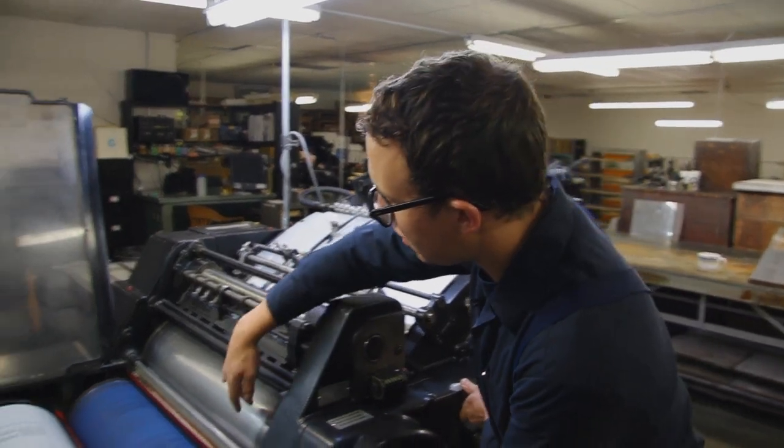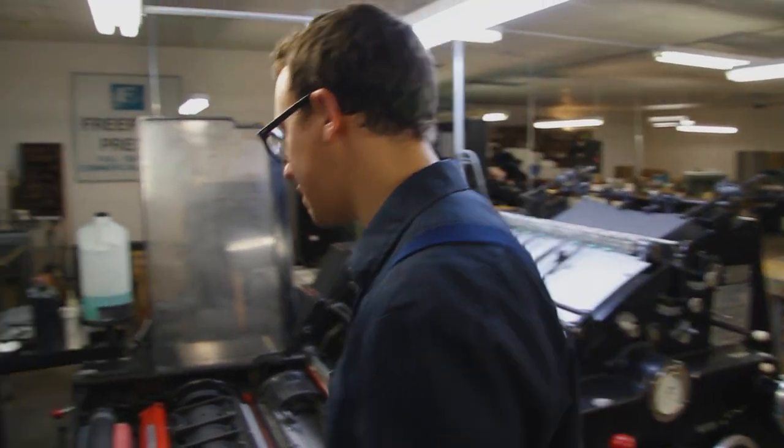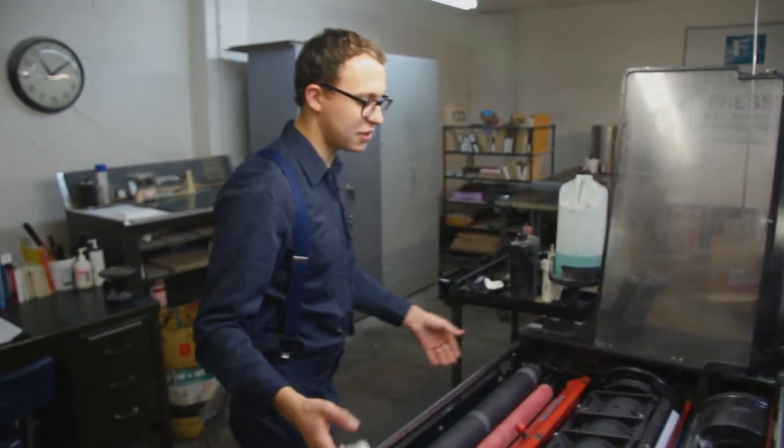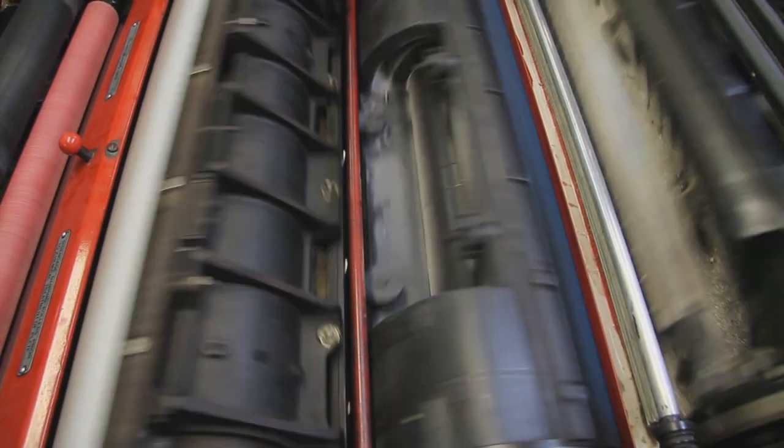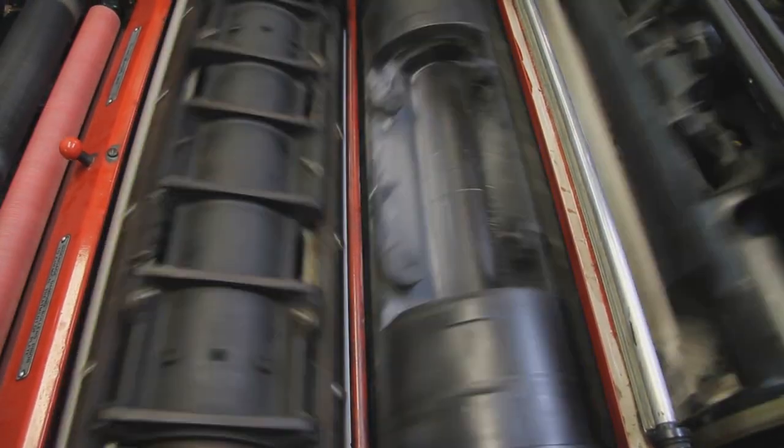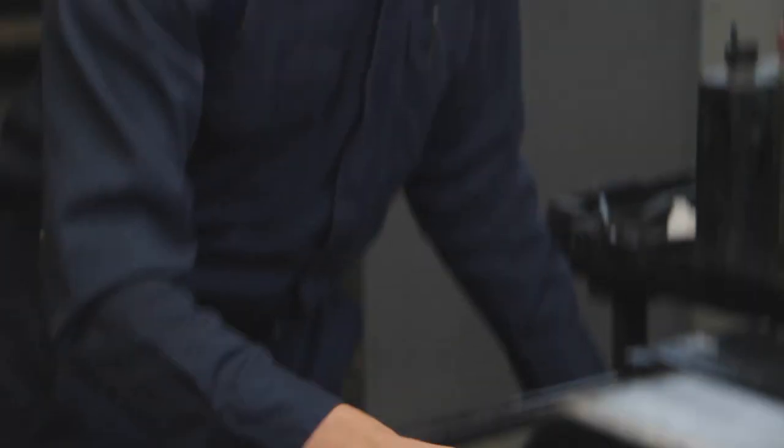When it comes across the impression cylinder, it's squeezed in between the blanket here, and that's why this is called offset printing, because you get the offset of the right reading plate to the rubber blanket. Underneath here is a blue image that was burned in with a UV lamp, and that accepts the ink, and the rest likes to accept water, and that just keeps the plate clean.